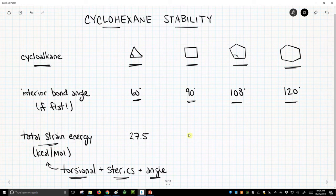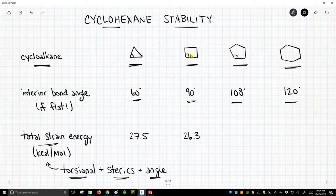For cyclobutane, we have a strain energy of about the same, 26.3. So you could say, well, there's less deformation for each bond angle, but we have more angles that are strained. We have four compressed angles instead of three.